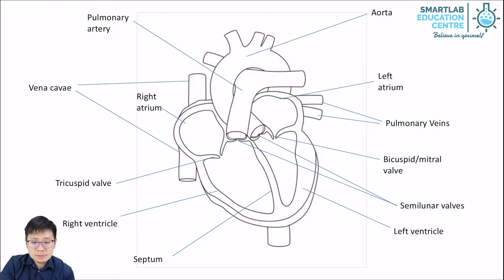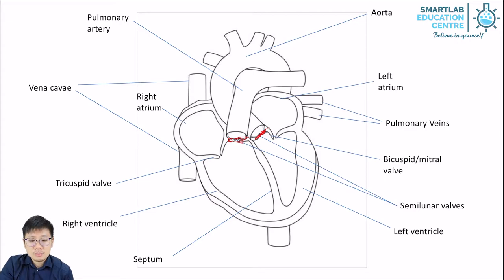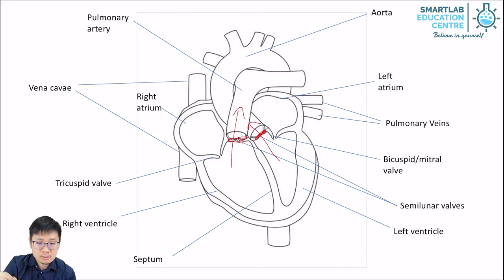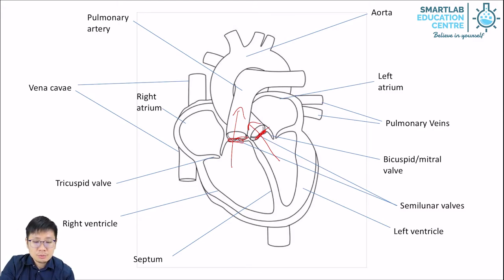Dividing the arteries from the ventricles are these special semilunar valves. The semilunar valves are also for preventing backflow of blood — they function as one-way doors. When the ventricles contract, blood can easily go into their respective arteries: the aorta and the pulmonary artery. Whenever the ventricles relax, blood is unable to go backwards because the valves are shut.